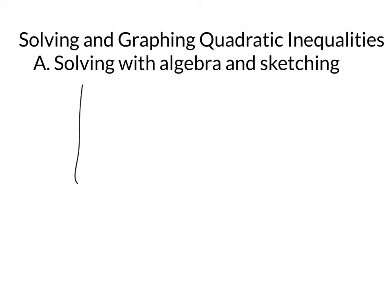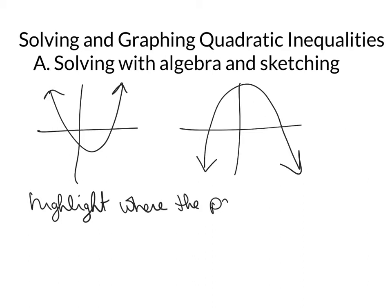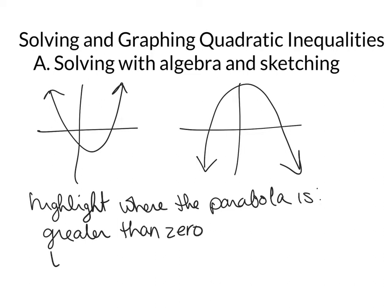First we're going to draw two parabolas. There are two general parabolas — they either open up or they open down. I'd like you to draw that on your paper and then highlight where the parabola is greater than zero in one color and less than zero in another color. Pause it right now and shade your own graph and see if it matches what my graph is going to be.